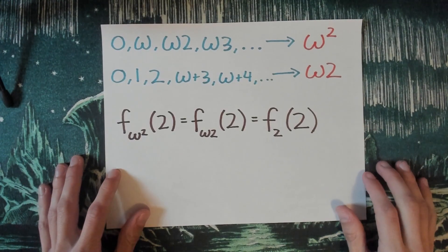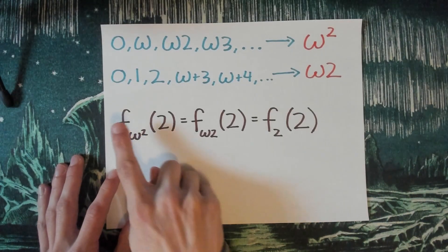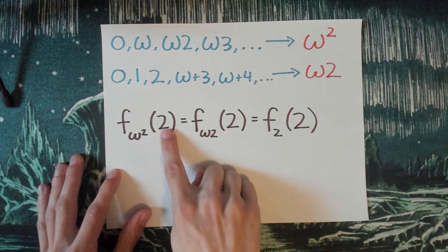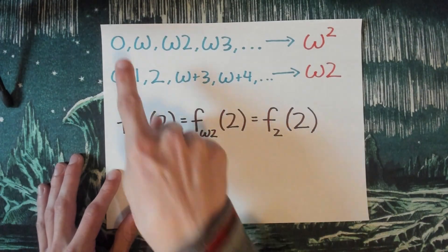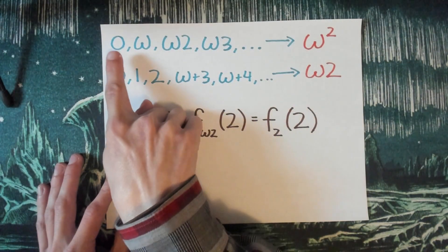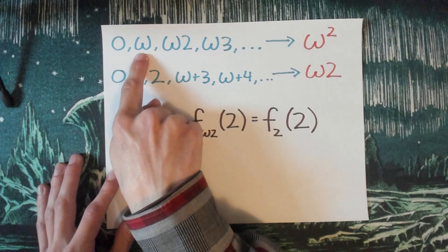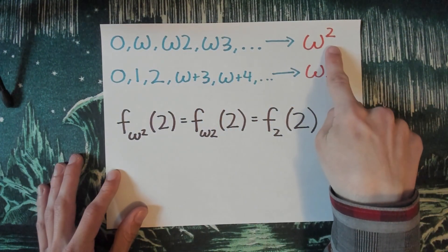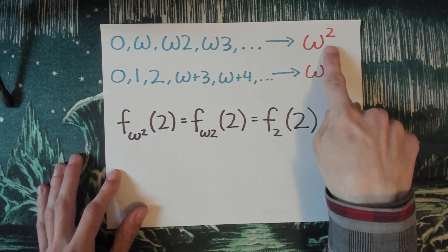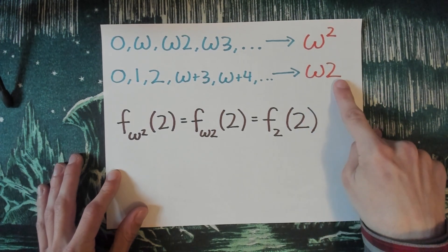Now let's get to calculating. So we're going to calculate f omega squared of 2. Now, what fundamental sequence am I going to associate to omega squared? I'm going to go with this one here, the same one that we've kind of been using, 0 omega omega times 2 dot dot dot, which is going to go ahead and be our fundamental sequence for omega squared.